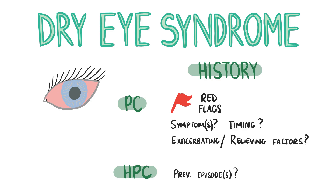Dry eye syndrome, or keratoconjunctivitis sicca, is a condition where either the eyes don't make enough tears or the tears evaporate too quickly. In the history you'd want to ask about red flag symptoms including acute onset, persistent or severe visual loss, or diplopia. Also ask about the current presenting symptoms, whether this is the first episode, when they started, and the duration of the symptoms.